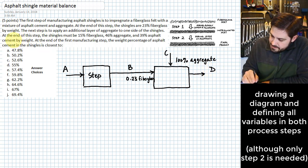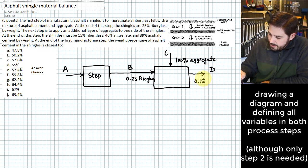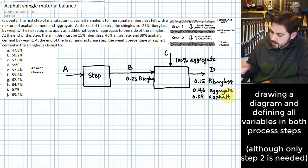And what else do we know about that? Let's see. We have 15% fiberglass, 46% aggregate, 39% asphalt cement by weight at the end of that last step. So we basically know fully all of the composition. Let me write those down. 0.15 fiberglass. We have 46% aggregate. And then we have 39% asphalt.